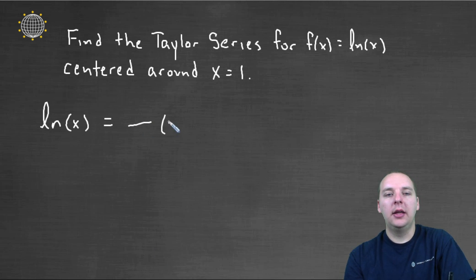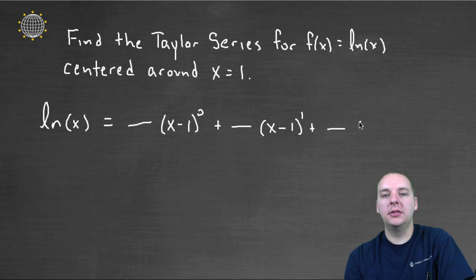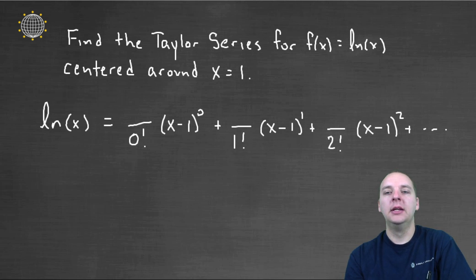So you remember we have a fraction x minus one to the zero, and then plus a fraction x minus one to the first, plus a fraction x minus one to the second, and so on and so forth. So what are these terms here? Well this is zero factorial, one factorial, two factorial, three factorial, et cetera. So we have blank over three factorial, x minus one to the third, plus these terms keep on going.